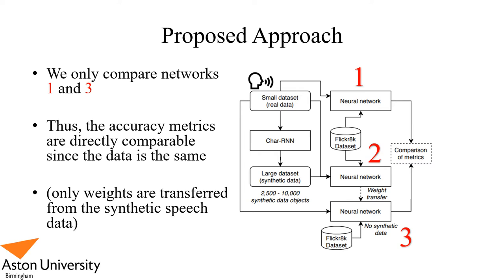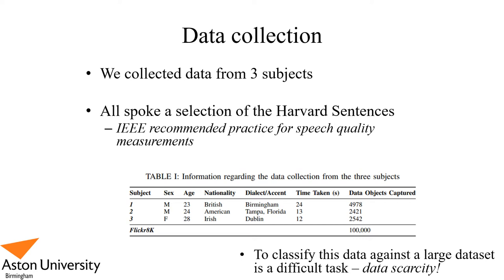To clarify: we only compare networks one and three. The accuracy metrics are directly comparable since all data is the same and we only transfer weights from the synthetic speech data. The synthetic speech data's classification accuracy is not included in the comparison of metrics — it exists only to derive some weights for network three.